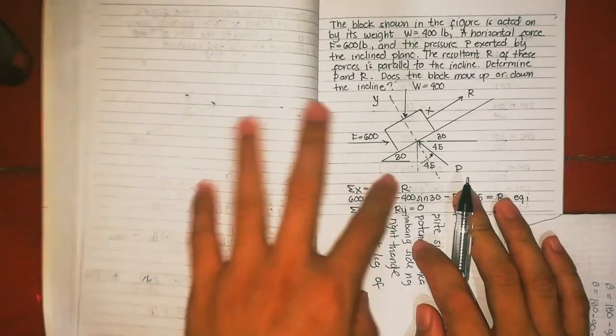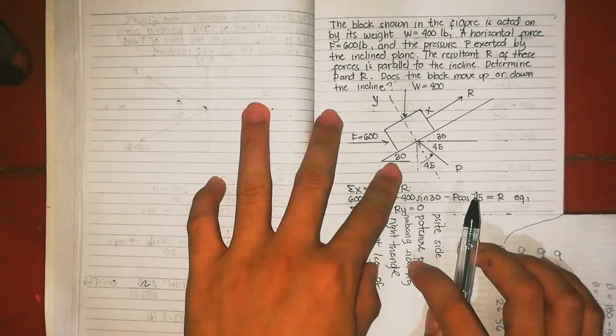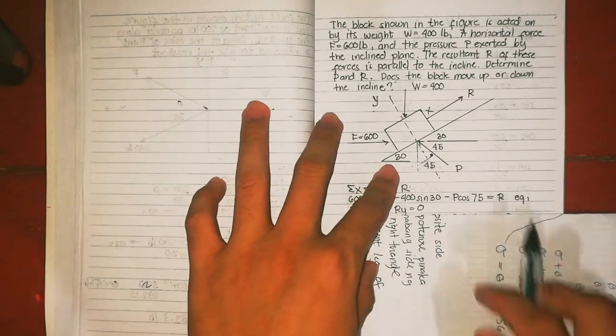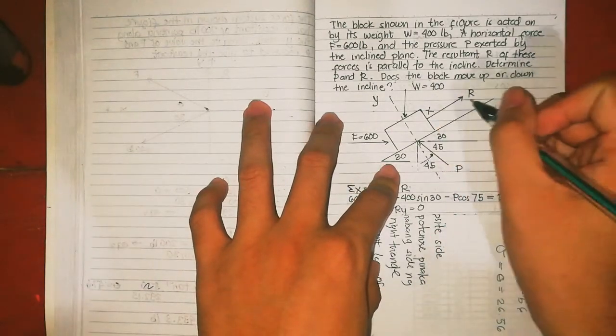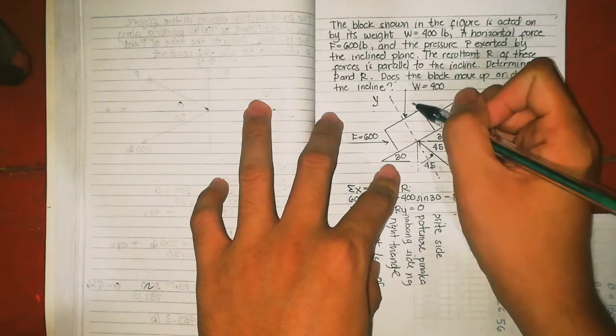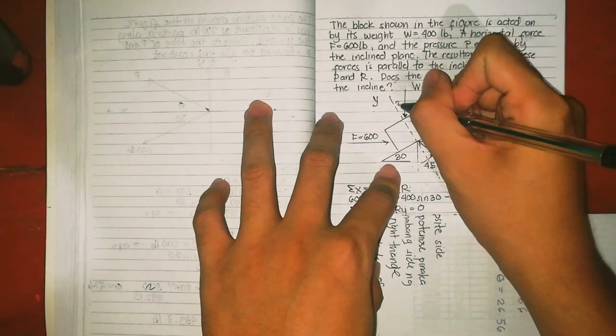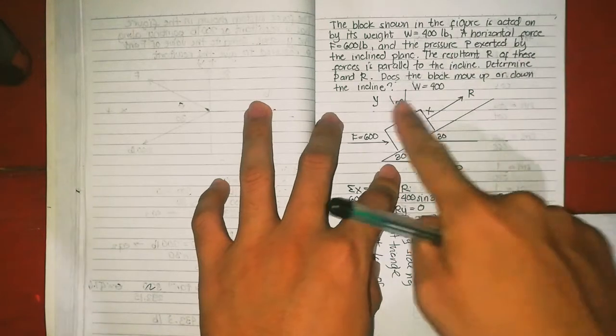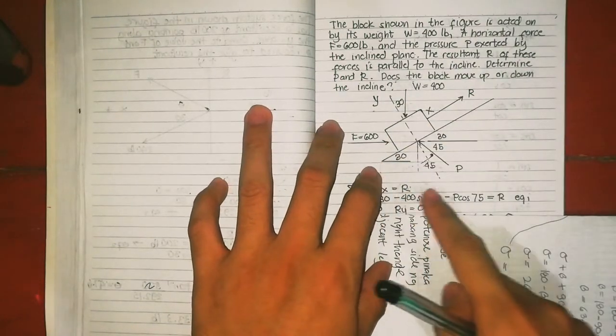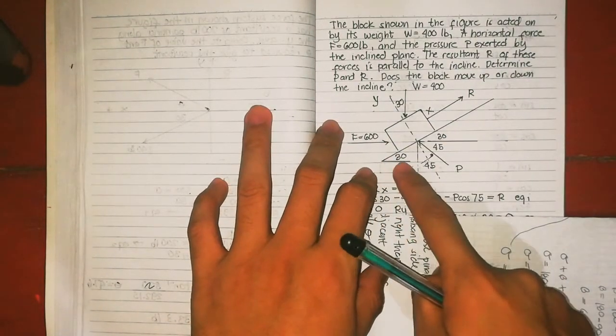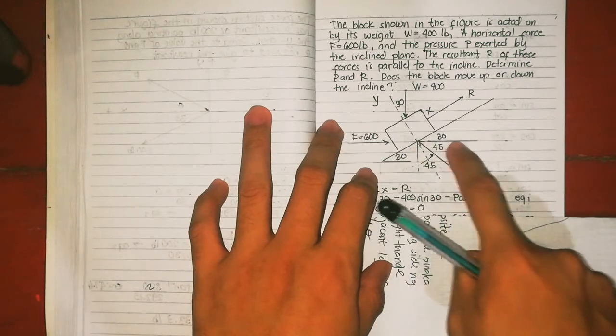Now, if this is 30 degrees, this is 30 degrees too. This is also 30 degrees. Since it's parallel, if we draw a parallel line, this is 30 degrees as well.